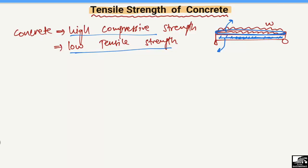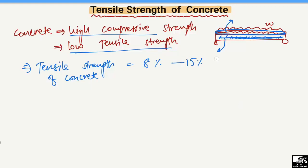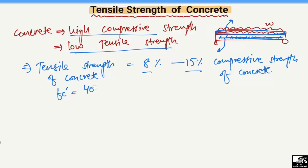Now, how much is the tensile strength of concrete? It has been determined that the tensile strength of concrete is in the range of 8% to 15% of the compressive strength of the concrete. For example, if the compressive strength of the concrete is 4000 psi (pounds per square inch), then we can calculate the tensile strength.